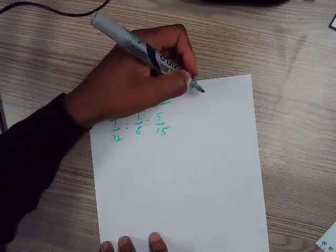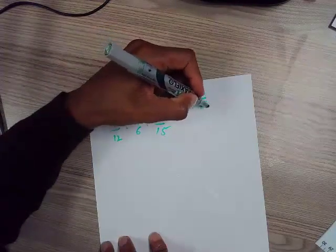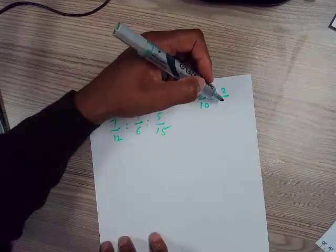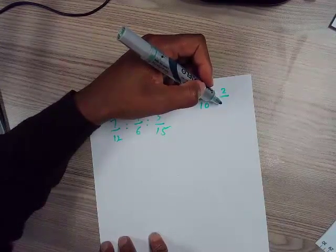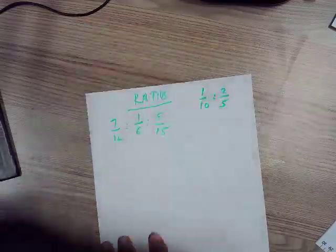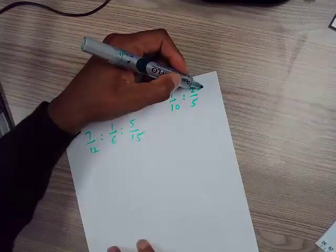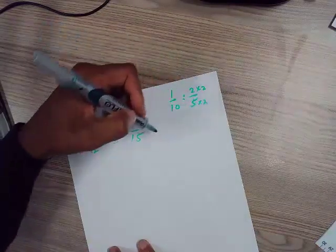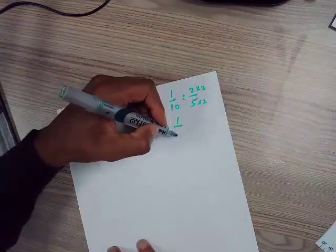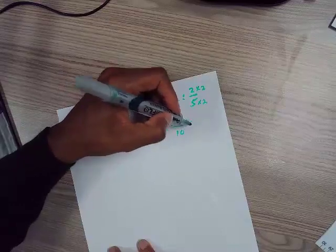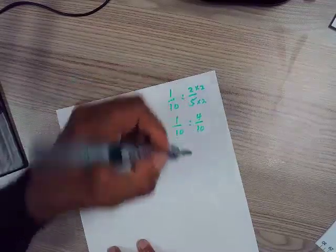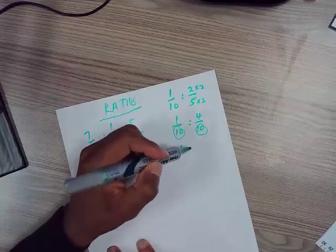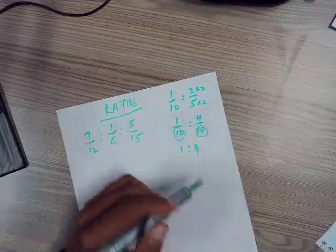Like for instance, if you've got one over ten and two over five, what you do on top you also do on the bottom. If you multiply by two both on top and the bottom, you will have one over ten is two over four over ten. So basically this you can get rid of and you will have one is to two is to four.